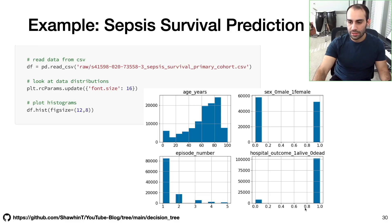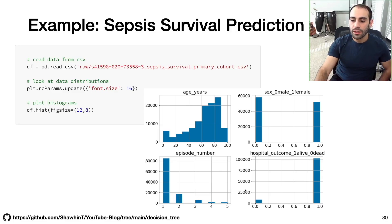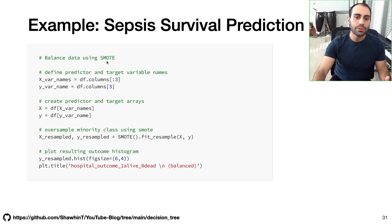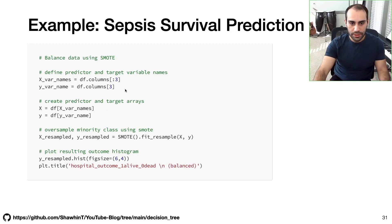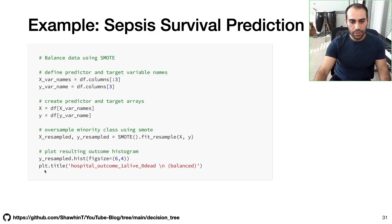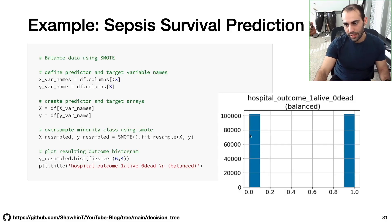The first thing to notice is that we have an imbalanced dataset — many more patients survived than died. While this is good from a human perspective, it's not good from a model development perspective, because our decision tree will overestimate the alive class and underestimate the dead class. One way to correct this is using SMOTE — Synthetic Minority Oversampling Technique — which oversamples the minority class to make it more equitable with the majority class and reduce bias. With just one line of code, we can apply SMOTE and plot the results — we now have a more balanced dataset.